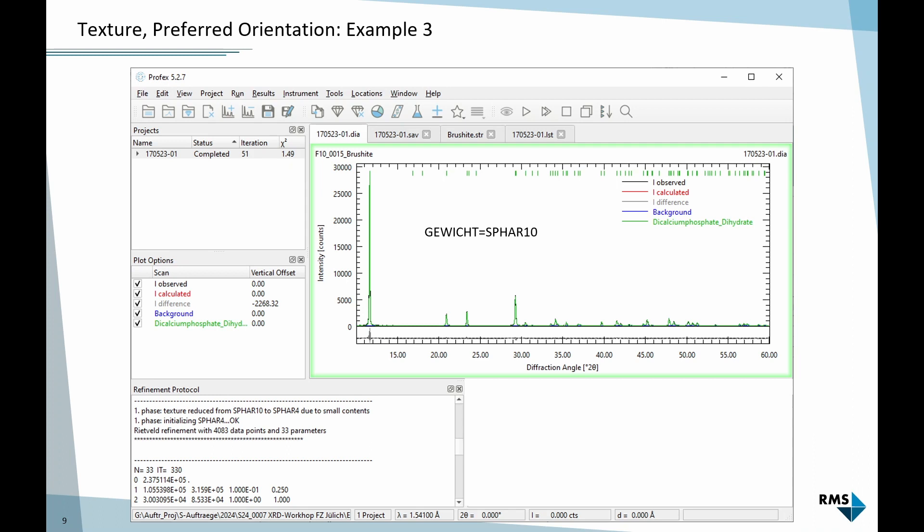If I check the output of BGMN in the refinement protocol, there's actually a note: Phase texture reduced from SPHAR 10 to SPHAR 4 due to small contents. BGMN refused to use the 10th order of spherical harmonics because the data quality is not sufficient. So it automatically reduced this complexity of the model and decided I go with 4.